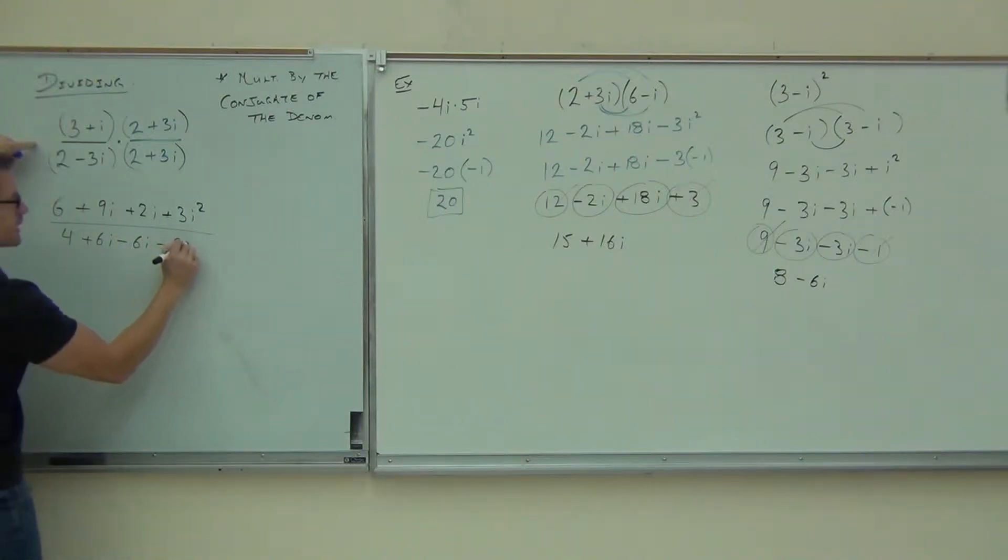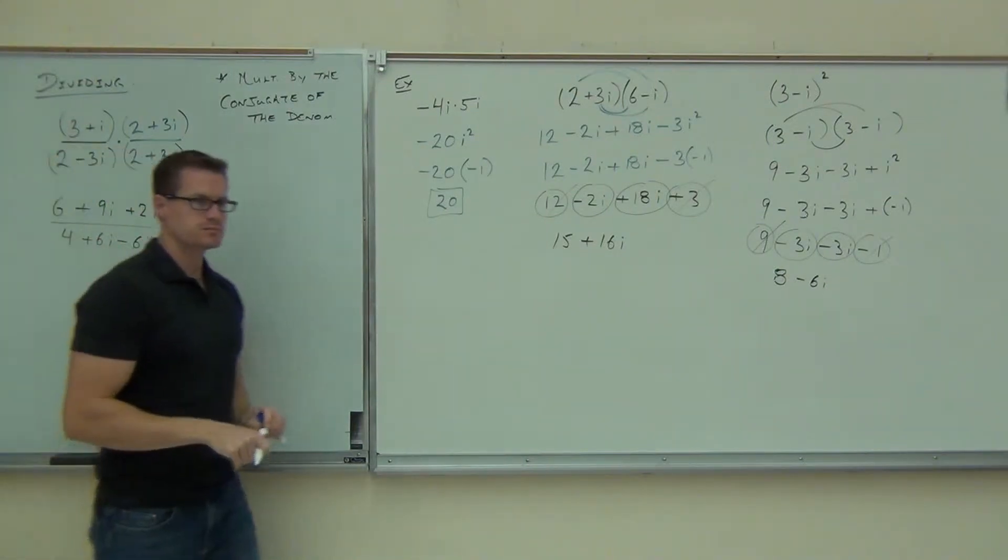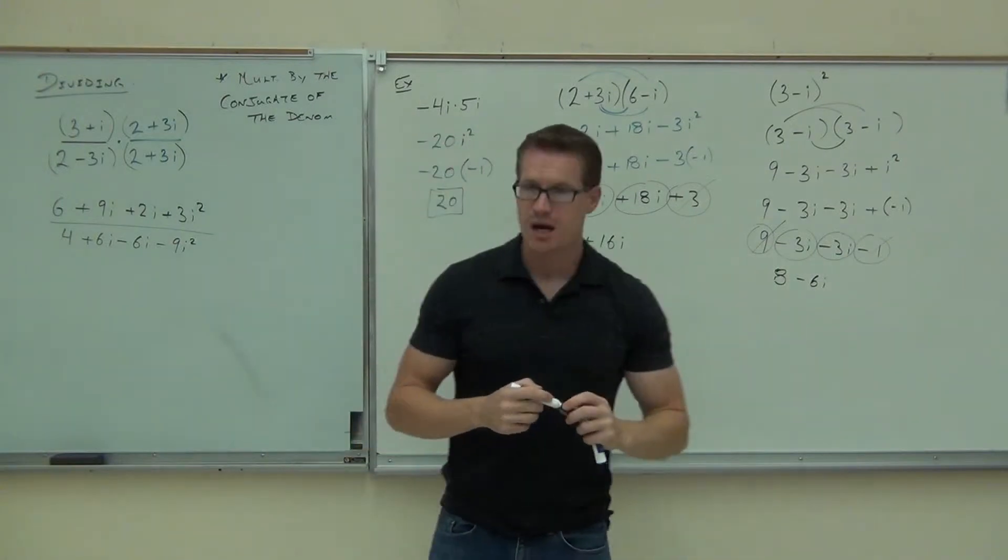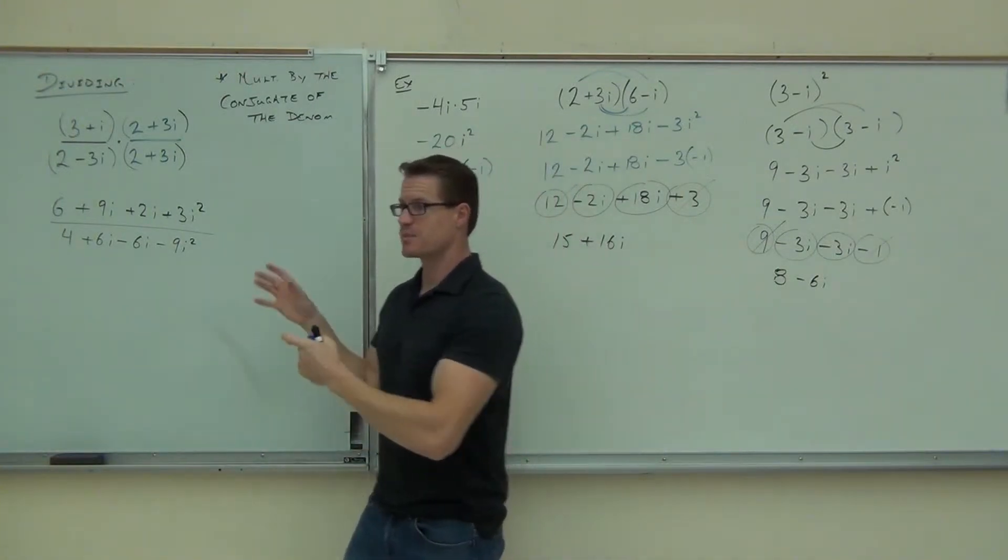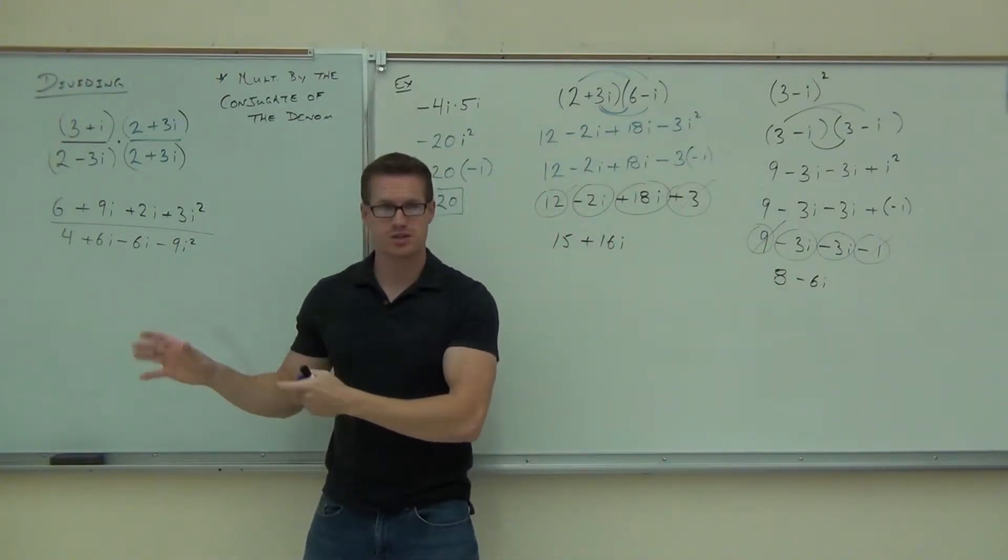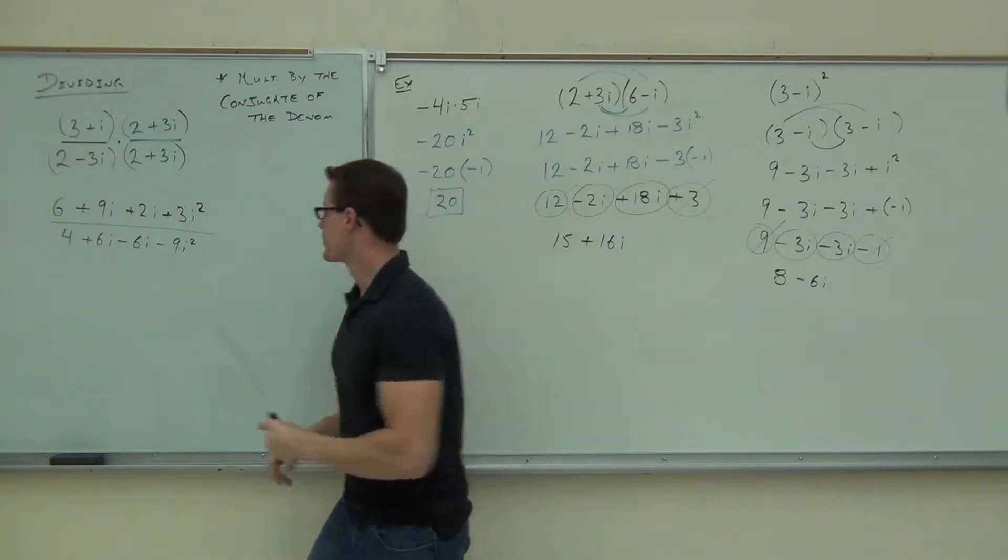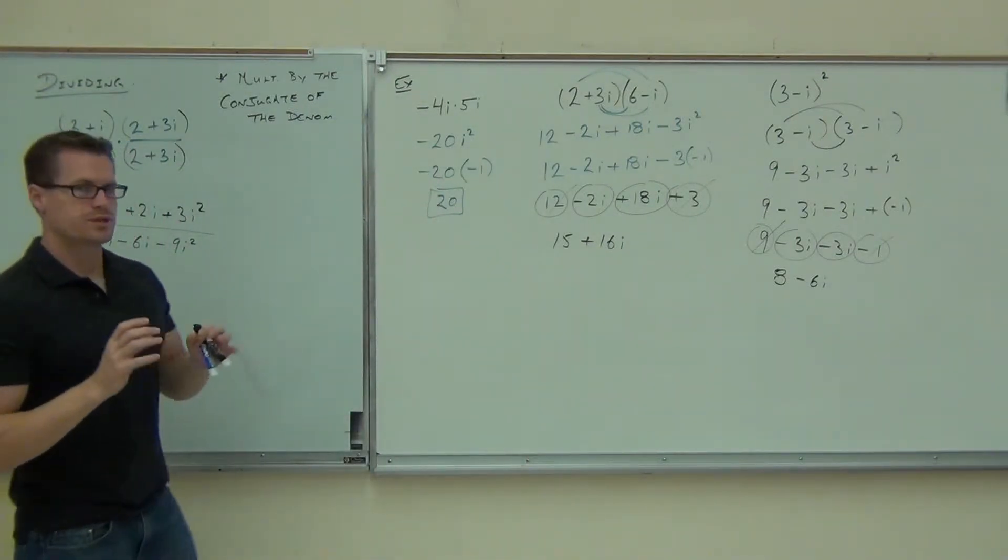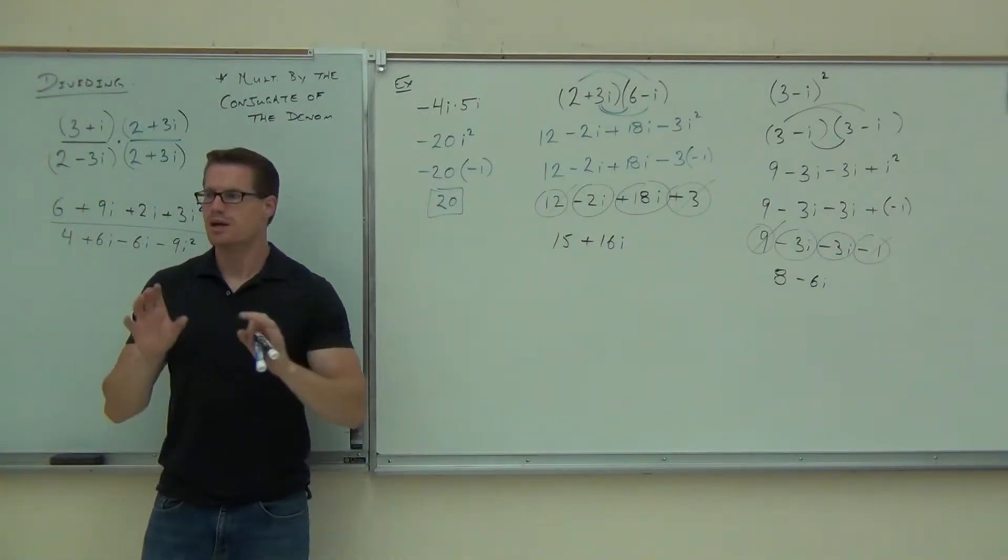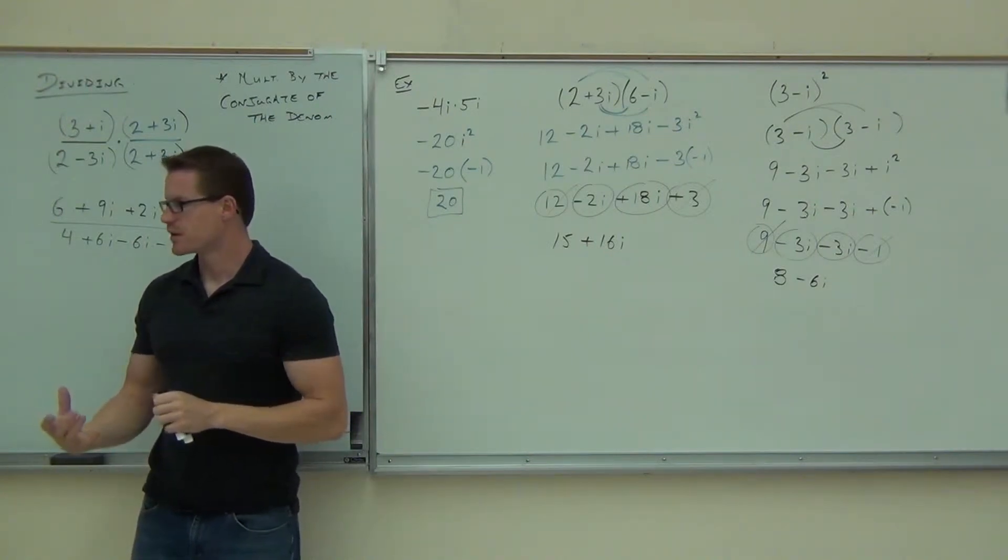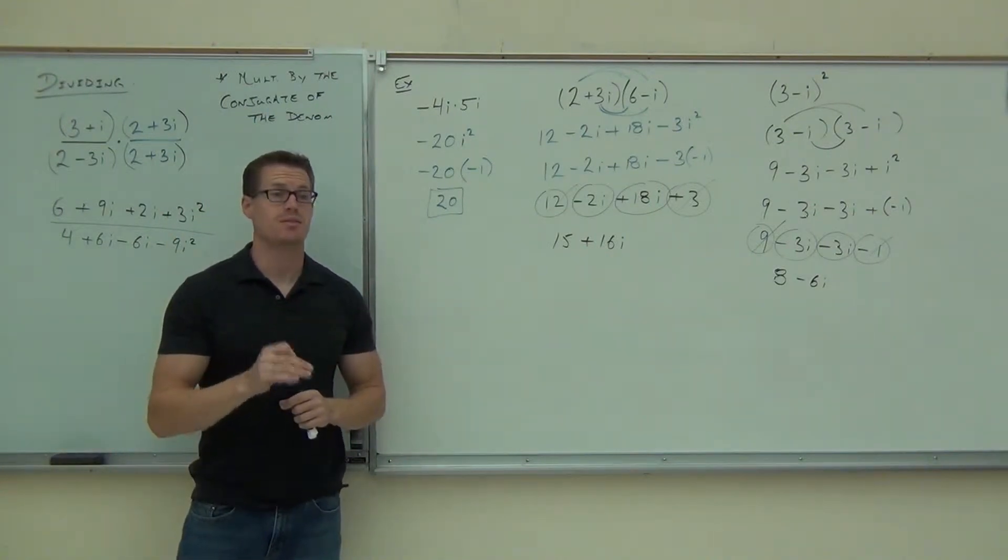Minus 6i minus 9i squared. I know I went quick on the distribution, but that's something we should be able to handle. Are you still with me? Now is the part to take your time. I know you don't have to distribute. Now is the part where you've got to really think about the i squared, think about what's happening to those signs, and get them right.